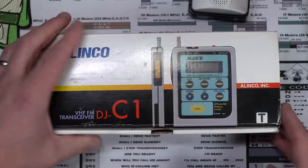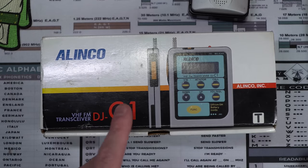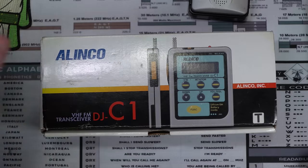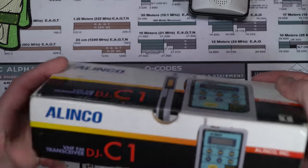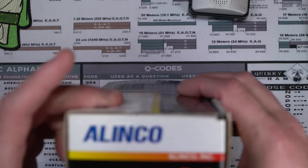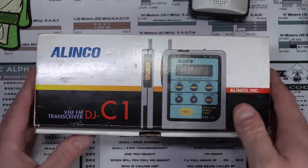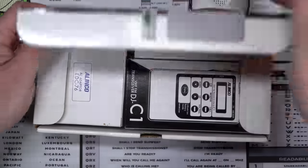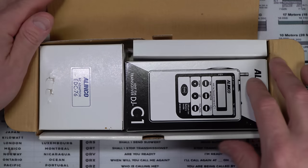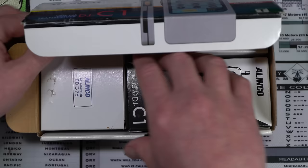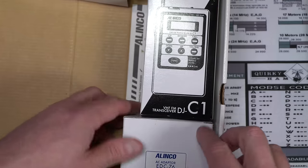But today we're going to be looking at this, which is the first of the credit card radios, the DJ-C1. This is supposed to be just an immaculately maintained radio, and the box you can see is really quite nice. I believe these were manufactured in 97. They began manufacture, quite a cool little radio. So let's take a look at it, a little bit different than the boxes we're used to today. There's boxes within boxes within boxes.